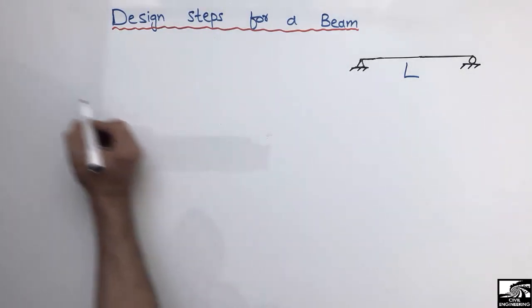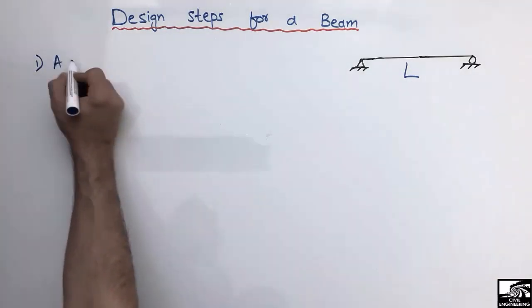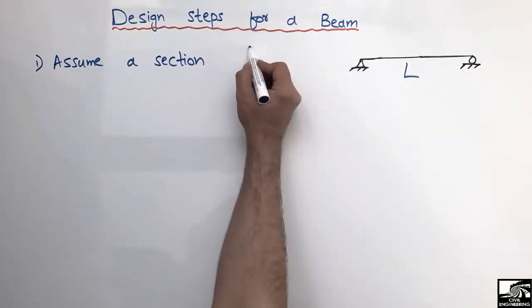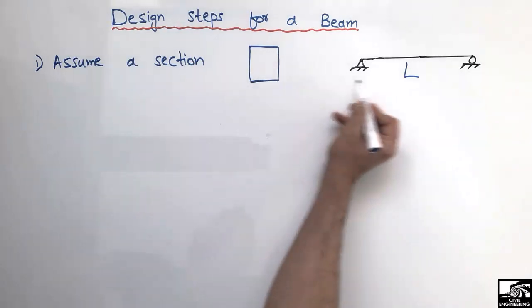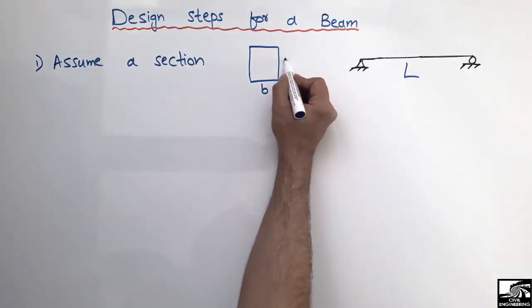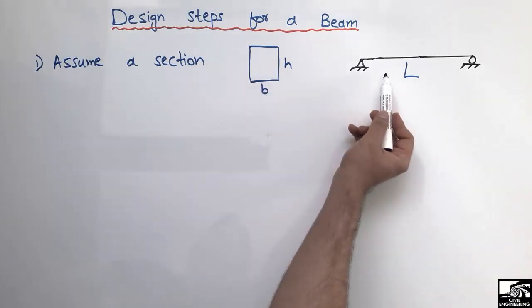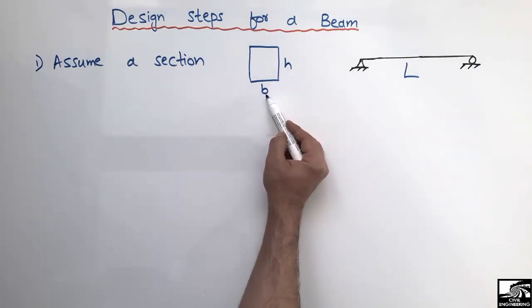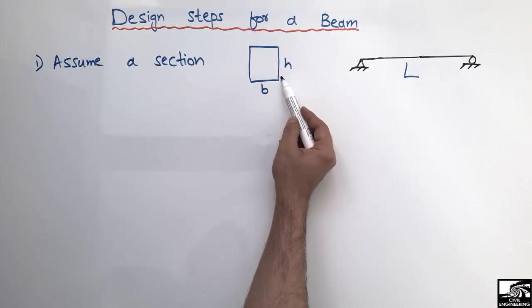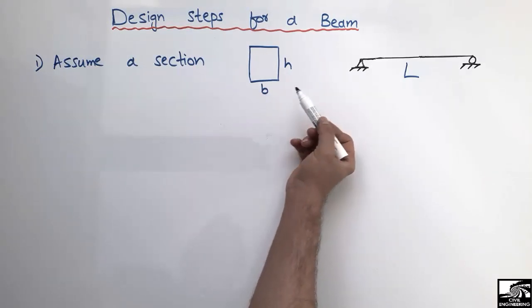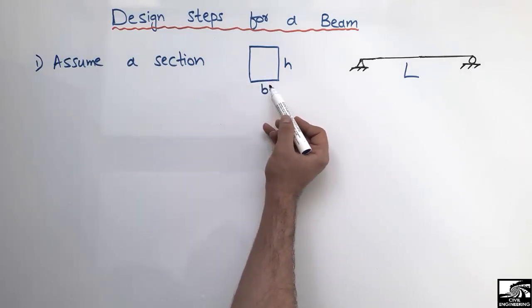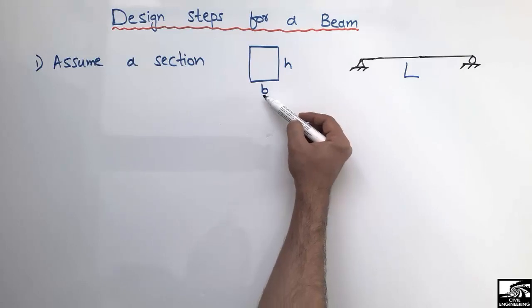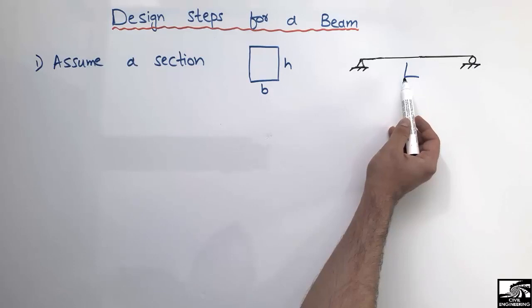The first and most important step is to assume a section. We have to assume a section for our beam — the width b and the height. This assumption depends on the length of the beam. The width and height play an important role; you should not select values too small or too large. This mostly depends on the experience of the designer, but different codes also provide rough rules to determine the width and height based on the beam length and applied loads.